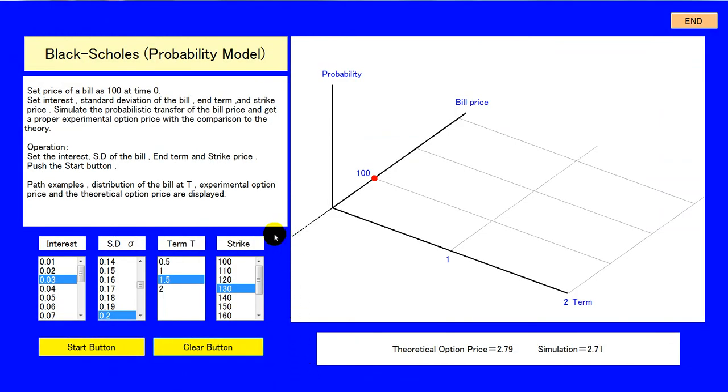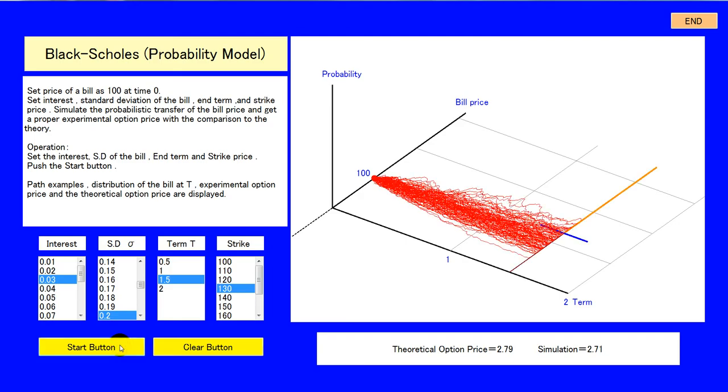The first is an approach with the probability theory. We set interest as 0.03, standard deviation 0.2, term 1.5, strike 130. The initial value is 100. Price change is simulated.